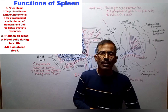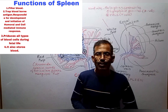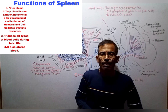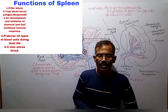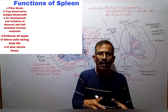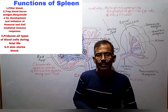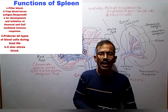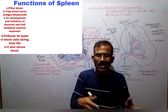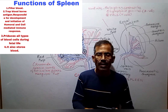In addition, spleen also produces all types of blood cells during fetal life. It also produces opsonins, properdin, and tuftsin. Spleen releases neutrophils following myocardial infarction. It also stores blood; in human beings, the spleen can store a cup of red blood cells, which is released in cases of hypovolemia and hypoxia.